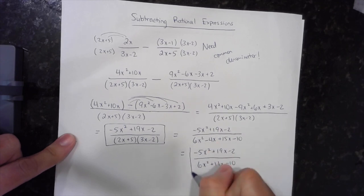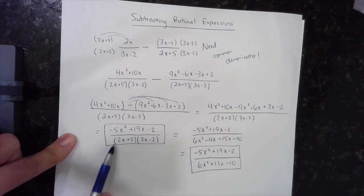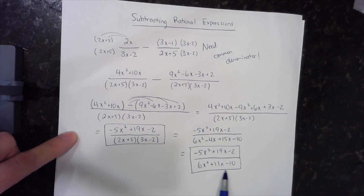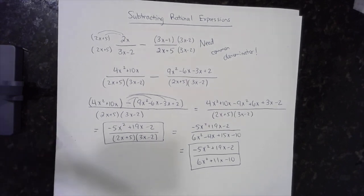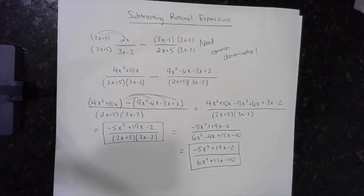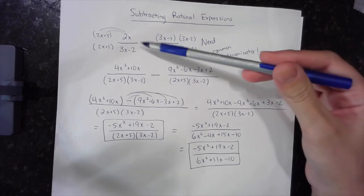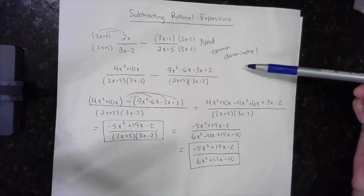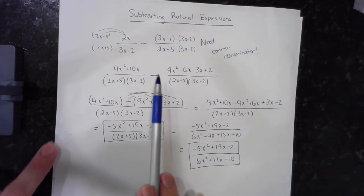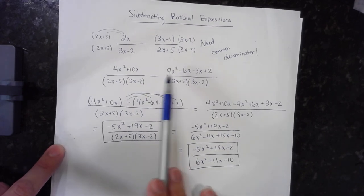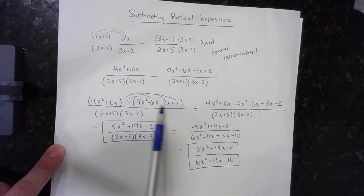And this is another representation of the same difference, one of them is in factored form, and the other one is actually multiplied out in standard form. So this is what we do when we subtract rational expressions. We always need a common denominator. Once you have that, just remember that that minus is going to distribute to every term in the second numerator, and then combine like terms and simplify.